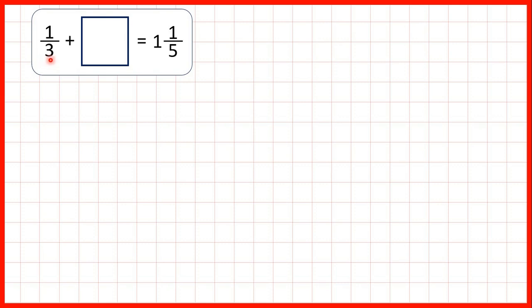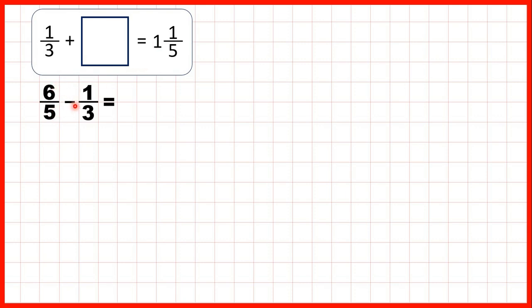Now we have 1/3 plus something equals 1 and 1/5. Here we have a missing number addition, and whenever we have a missing number in an addition problem, we always use subtraction to find our missing number. So we need to work out 1 and 1/5, which is the same as 6/5, and subtract 1/3.